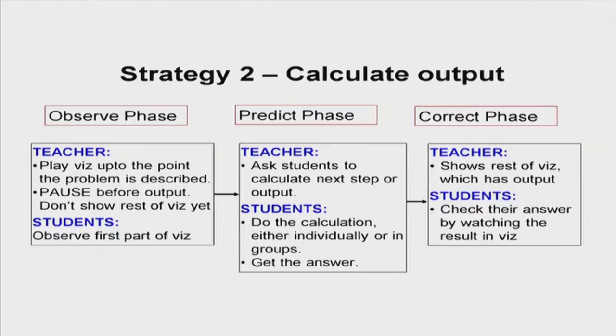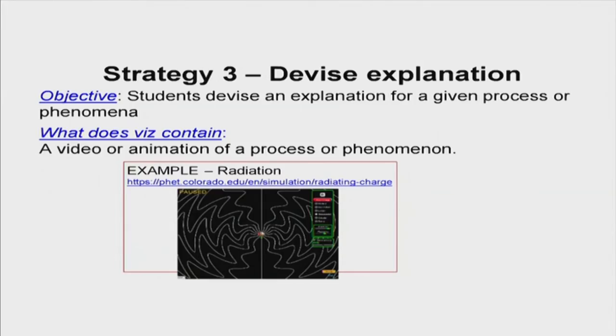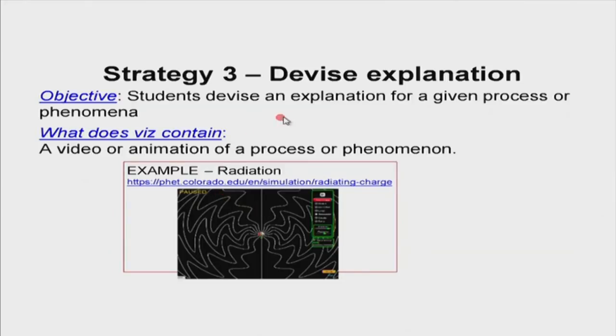One last strategy — there are several, but I am showing three examples and then you can get creative. The third strategy is not as much for problem solving as for coming up with explanations. There is some physical phenomenon happening — for example, a radiation pattern: there is an antenna at the center, the antenna is shaken a little, and a radiation pattern emerges. Some parameter is changed and its effect is seen. The goal is for students to explain why that effect happened — to come up with the underlying microscopic explanation.